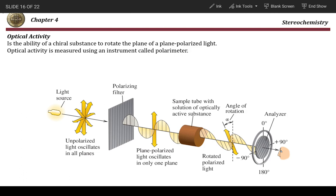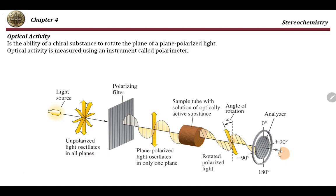The polarimeter is an instrument which has a light source, and this light source emits light that oscillates or moves in different directions. However, when this light passes through a polarizing filter, only one of the waves moving in a certain direction will pass — all the others will be removed.